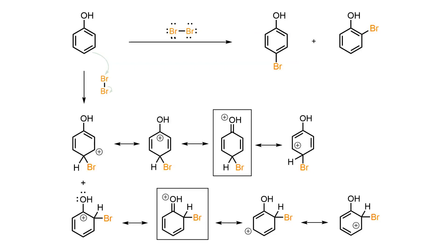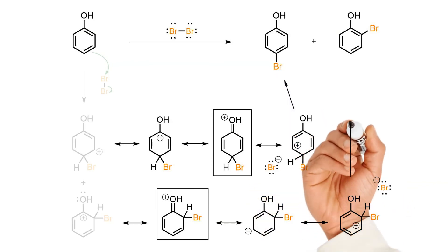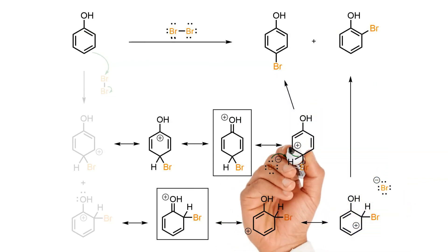This would not be possible if bromine attached at the meta position, which further explains the observed regioselectivity. The rate-determining formation of the carbocations is followed by rapid deprotonation to regenerate the aromatic pi system and provide the observed para and ortho products.